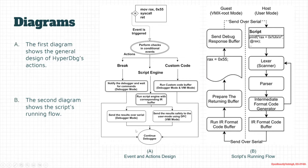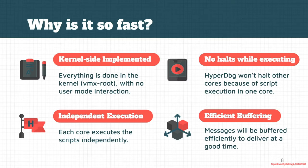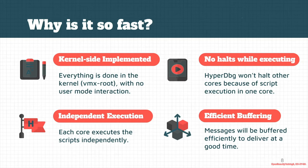Let's review why the script engine is so fast compared to WinDbg. It's fully kernel-side implemented — everything is done in kernel mode and VMX root mode with no user mode interaction. When your script gets executed in kernel mode, everything runs there. In contrast, WinDbg parses scripts in a user mode debugger, passing everything through a serial port, and queries the guest for registers or memory addresses needed by the script.